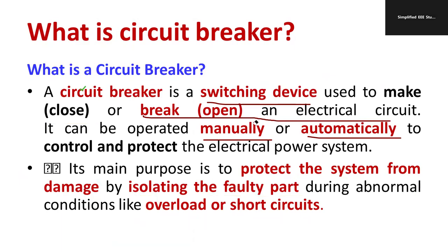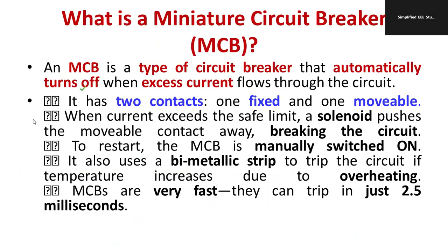Now let's look at the types of circuit breakers available. One of the most popular types is the miniature circuit breaker, short form MCB. MCB comprises two components: one is the fixed contact and the other is the movable contact. During normal conditions, the fixed and movable contacts are connected to each other. Whenever a fault occurs, the movable contact separates from the fixed contact.